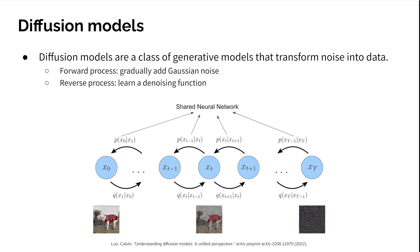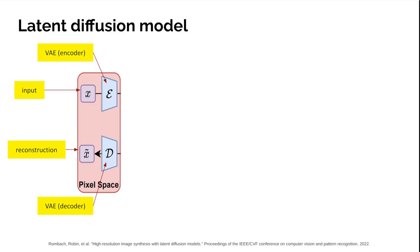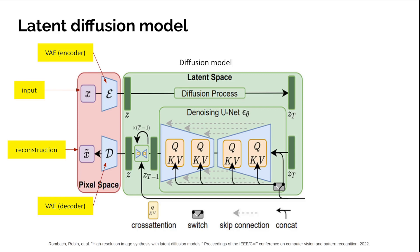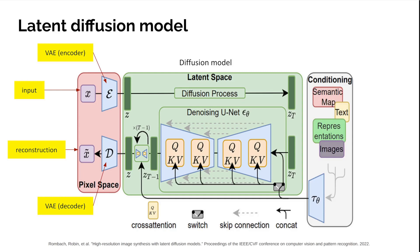Performing the diffusion process on high-dimensional data such as high-resolution image synthesis can be computationally challenging. To tackle this, latent diffusion models bifurcate the diffusion model training into two phases. They first use a variational auto-encoder to take images from pixel space to a compressed latent space, and then use a diffusion model to perform the diffusion process in this compressed latent space. To guide the diffusion model, they use an auxiliary network that provides the conditioning information.